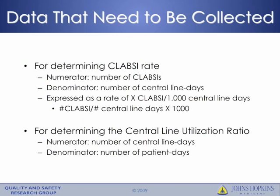There are several important data points needed to enter data into the NHSN system for CLABSI surveillance. For determining the CLABSI rate, the numerator is the number of CLABSIs in a unit, and the denominator is the number of central line days in the unit over the same time period. This is expressed as a rate of CLABSIs per 1,000 central line days, determined by dividing the number of CLABSIs by the number of central line days and multiplying by 1,000. There is also the central line utilization ratio, where the numerator is the number of central line days and the denominator is the number of patient days in the unit over the same time period.